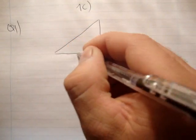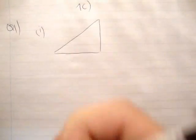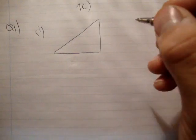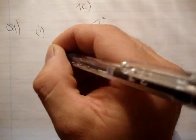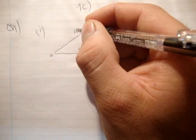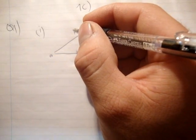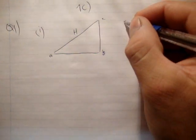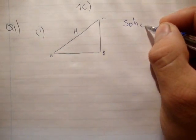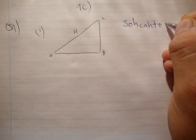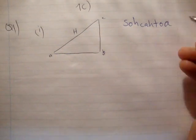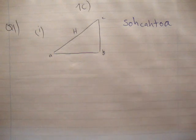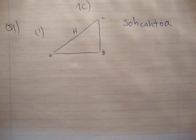Part 1. You're given triangle CBA and H. Remember you have SOHCAHTOA: S-O-H-C-A-H-T-O-A. Sine is opposite over hypotenuse. Cosine is adjacent over hypotenuse. And tangent is opposite over adjacent.